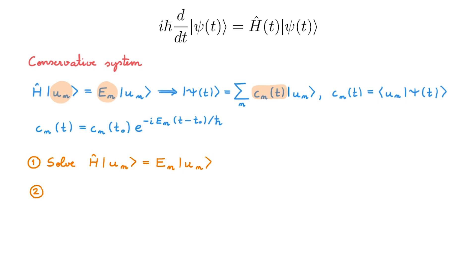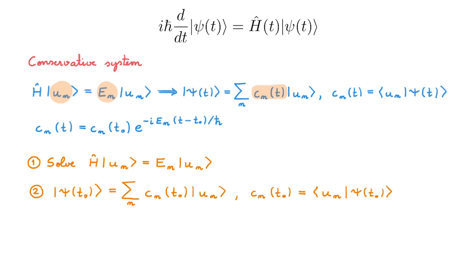The second step is to impose an initial condition, which is the state of our system at some initial time t0. We're working in the energy basis, so we expand the state in this basis in terms of the C coefficients, where the C coefficients are given by the usual expression and provide the energy representation of the state. And third, at the later time t, the state of the system is obtained by simply adding the time dependence of each C coefficient we just found, and we end up with this expression.